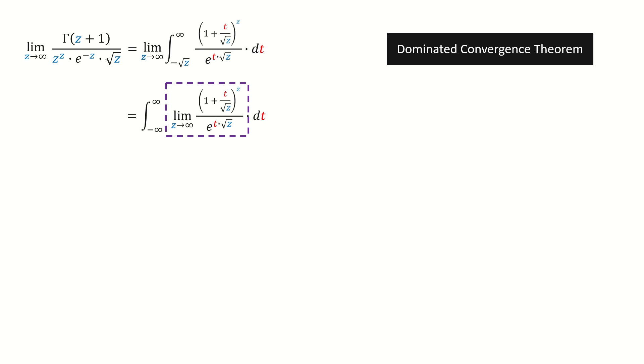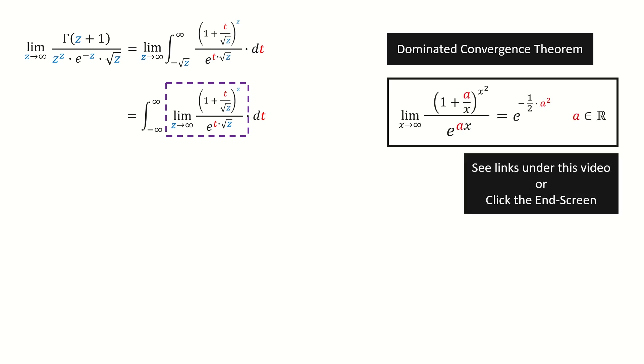Next, we need to compute this limit. Recall the result we derived in the previous video. Here we set a equals t, and x equals square root z. So we got this very important limit.